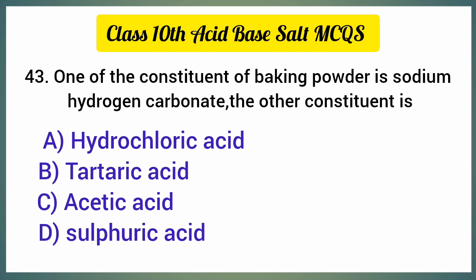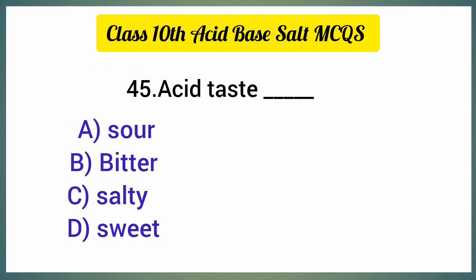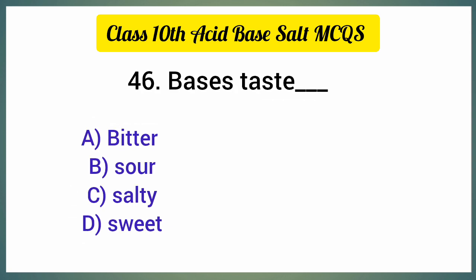One of the constituents of baking powder is sodium hydrogen carbonate; the other constituent is — the correct option is option B, tartaric acid. Acid present in apple is — the correct option is option B, malic acid. Acid taste test — correct option is option A, sour; base taste test — correct option is option A, bitter.